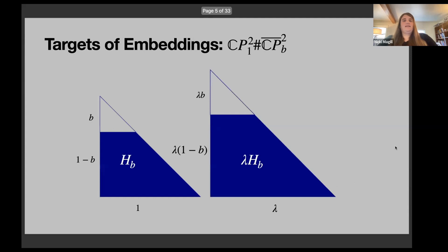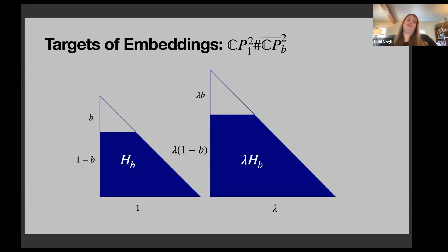We'll embed these ellipsoids into Hirzebruch surfaces, or one-fold blowups of CP². These pictures show the moment polytope of a one-fold blowup of CP². We start with a triangle of size one — the moment polytope for CP² — then remove a ball of size b, corresponding to a small triangle. After collapsing the boundary via the Hopf fibration, we're left with H_b. Lambda H_b corresponds to scaling the symplectic form by lambda, which in the polytope picture just scales the polytope by lambda.